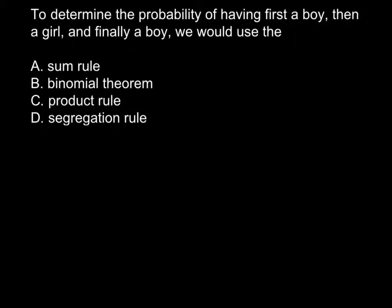Today's problem is to determine the probability of having first a boy, then a girl, and finally a boy. We would use the 'and' rule. Here are four different answers to choose from. I'll explain the correct answer and how to calculate it — I want you to understand every answer, how we apply each rule, and when and how to calculate.